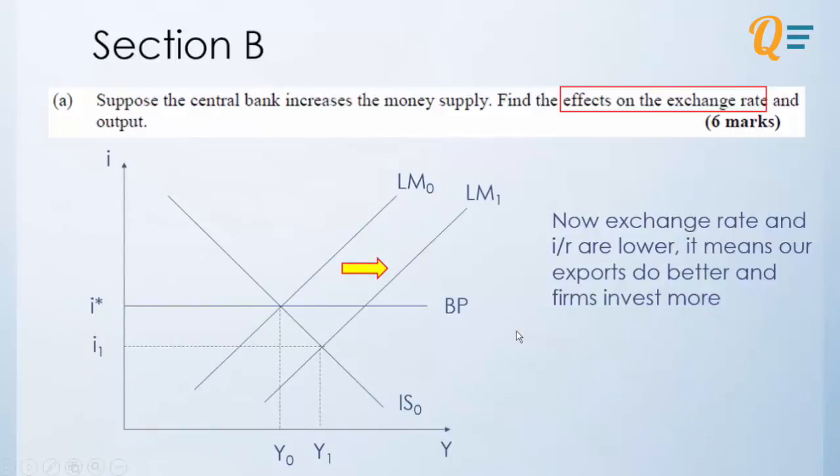So now what happens? So now we know that exchange rate is lower. Interest rates are lower as given from this graph. It means our exports do better because our exports are cheaper. And it might not be the same for every country, but essentially an export-based country like Singapore would definitely do better. And given that interest rates are lower, firms tend to invest more by borrowing more. So IS curve will shift to the right. And note that the shift is not a one-off shift, it is a continuous adjustment towards the equilibrium.